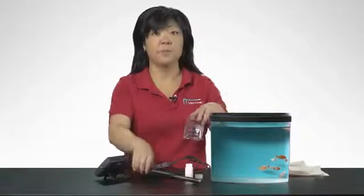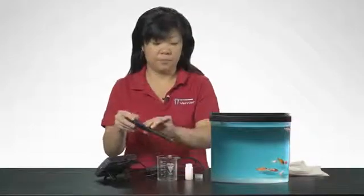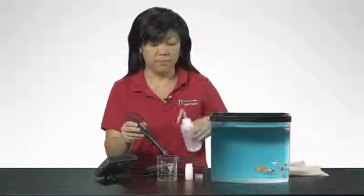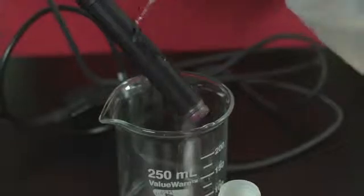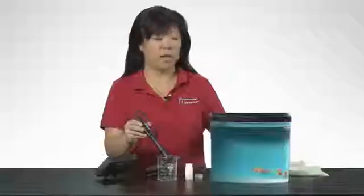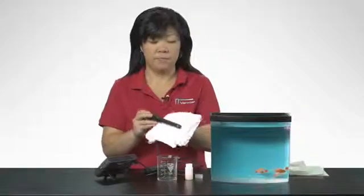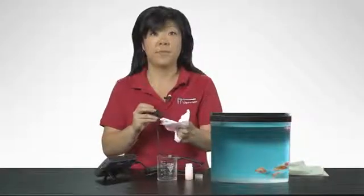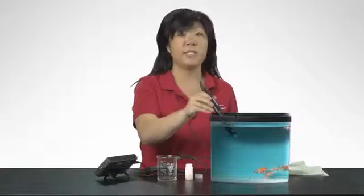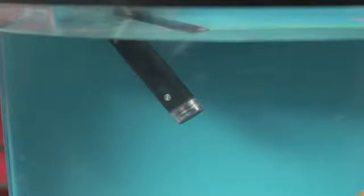To obtain measurements, rinse the tip of the DO probe with distilled water and gently blot dry with a paper towel. Place the probe into the sample to be tested. Make sure that metal dot near the tip of the optical DO probe is immersed for temperature compensation to work.